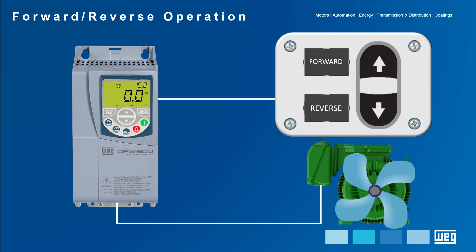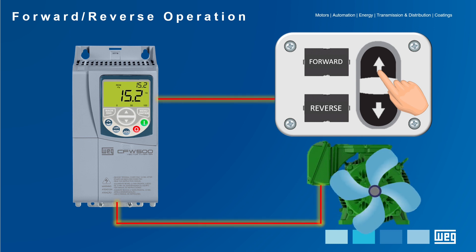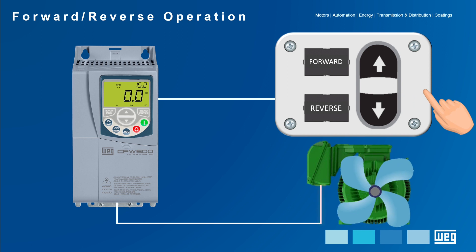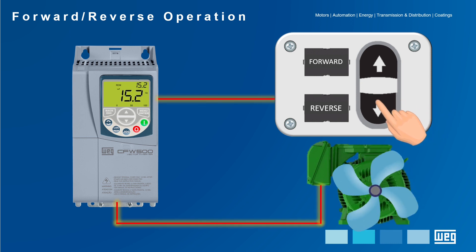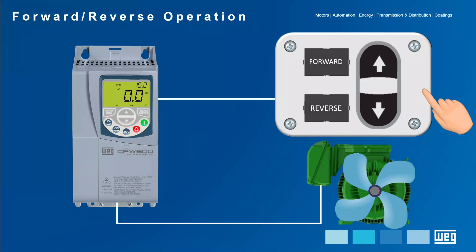After finishing the digital input connections and adjusting the parameters, it can be seen in the operational representation that by keeping the UP arrow button pressed, the drive starts the motor clockwise, respecting the acceleration ramp up to the reference speed, and when the same button is released, the drive decelerates the motor by ramp until it stops. The same happens when the DOWN arrow button is pressed — the drive switches the direction of rotation and starts the motor counterclockwise. When this button is released, the motor stops. These were some of the commands used in the CFW500 inverter drive.